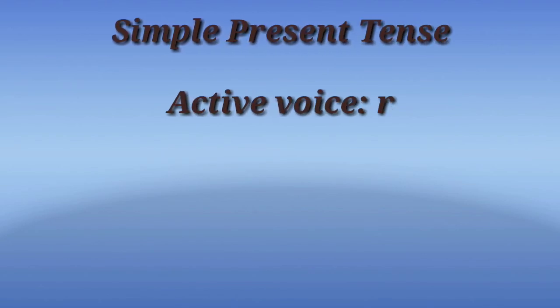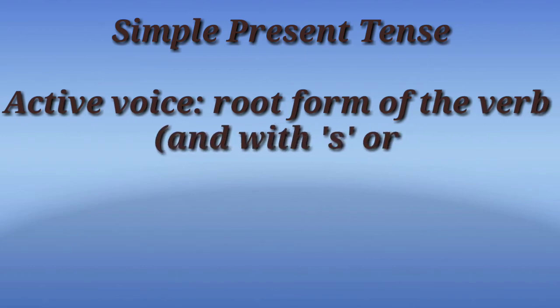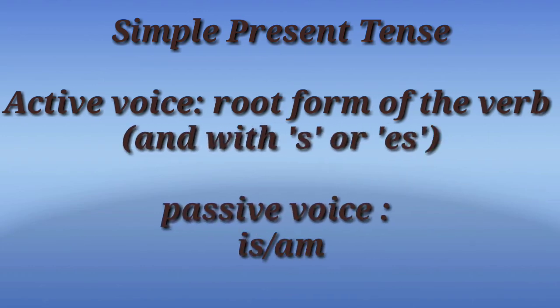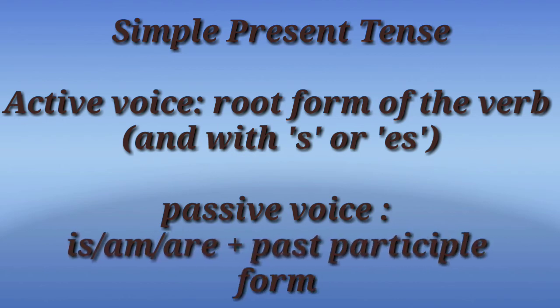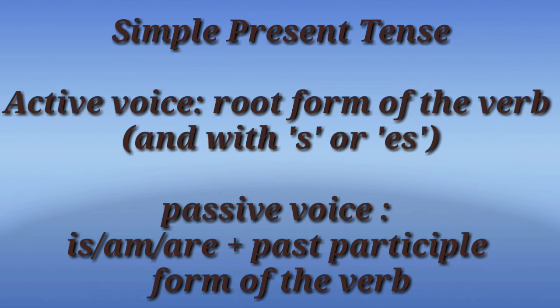Now let us see how the form of the verb changes according to the tense. In simple present tense, in active voice we use the root form of the verb, and in passive voice we write 'is,' 'am,' or 'are' and the past participle form of the verb.